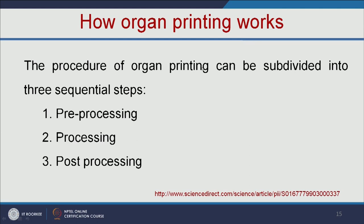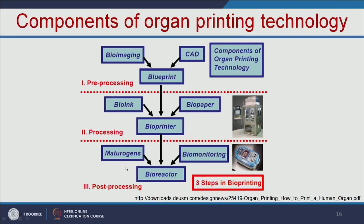The procedure of organ printing can be subdivided into three sequential steps: pre-processing, processing, and post-processing. In pre-processing, you perform bioimaging of the particular organ and then, based on CAD, make a blueprint of that organ. In the processing step, you use bio-ink (your cells) and bio-paper (the scaffold) to print the organ using the bio-printer. Once the organ is printed, you add matrogens — chemical or mechanical signals — to make the artificially printed organ work like the real organ. In biomonitoring, you monitor the organ in the bioreactor to verify its function is similar to the original organ.